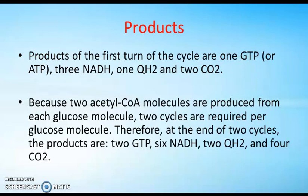The products of the first turn of the cycle are: one GTP or ATP, three NADH, one QH2, and two CO2. Because two acetyl-CoA molecules are produced from each glucose molecule, two cycles are required per glucose molecule. Therefore, at the end of two cycles, the products are two GTP, six NADH, two QH2, and four carbon dioxide.